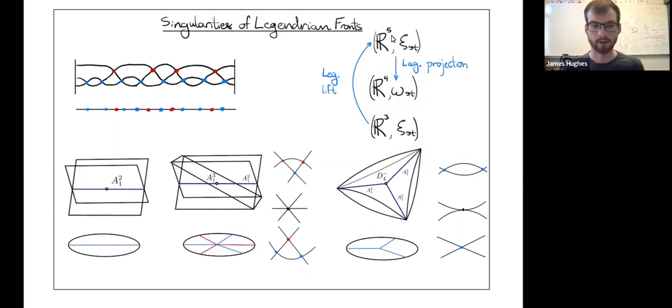These fronts I get from: if I look at a crossing in my Legendrian closure of a positive braid, then I can push that down into the four ball, and what I get are these two sheets crossing.